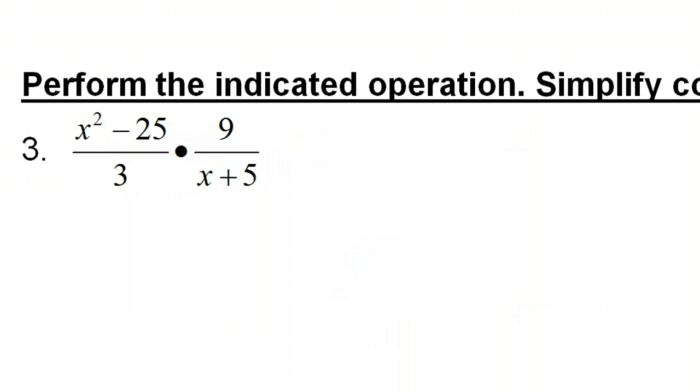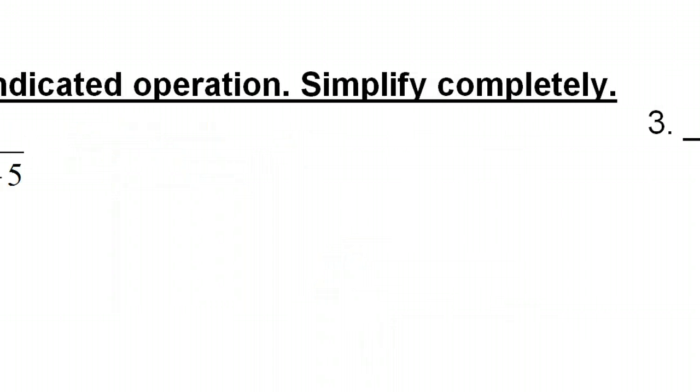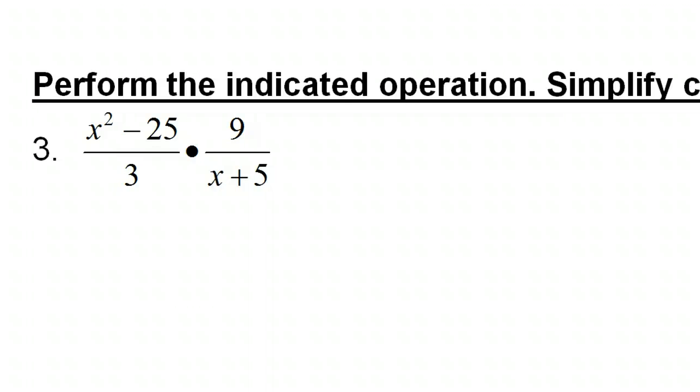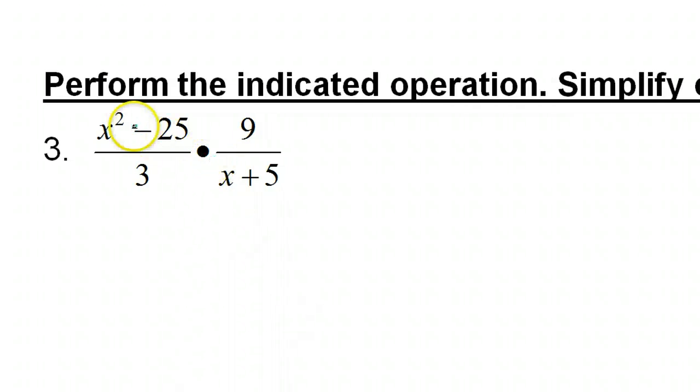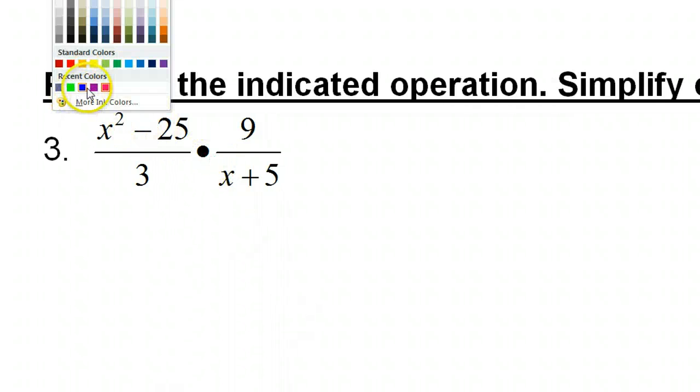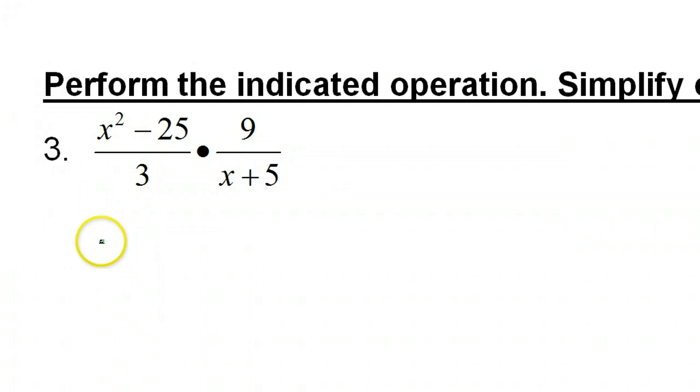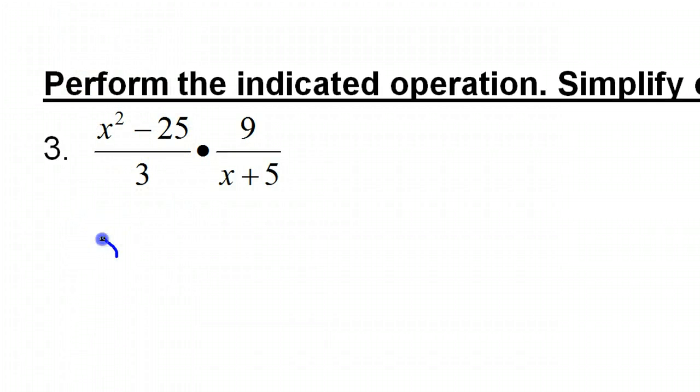Okay. So, perform the indicated operation. Simplify completely. We're doing multiplication. But, if you see something that factors, you should do that. Agreed? Okay. So, x squared minus 25. That's x plus 5, x minus 5.